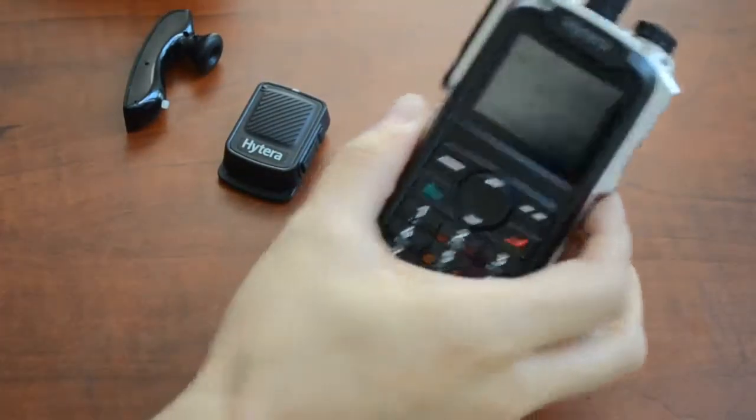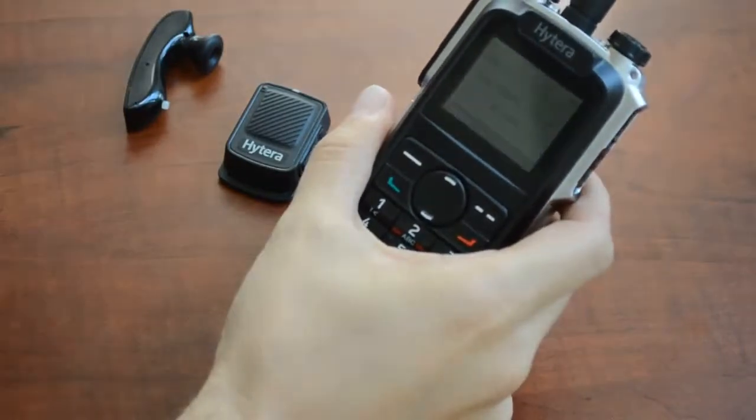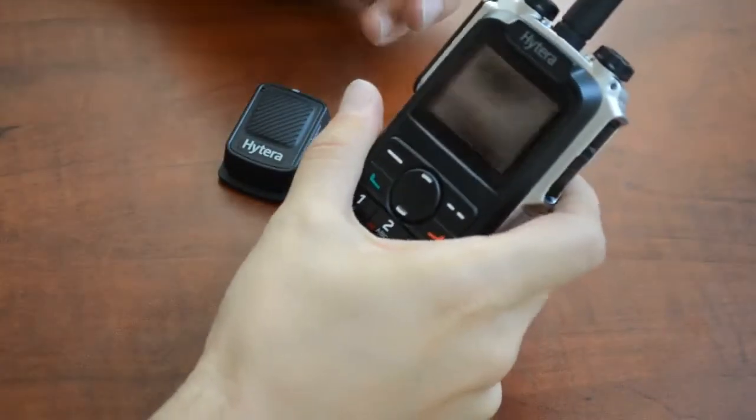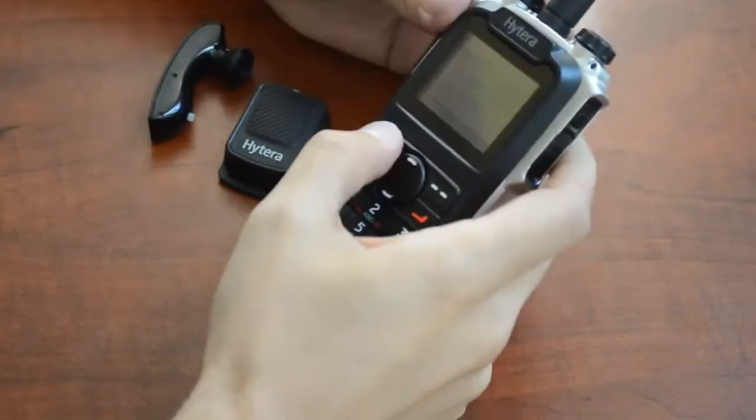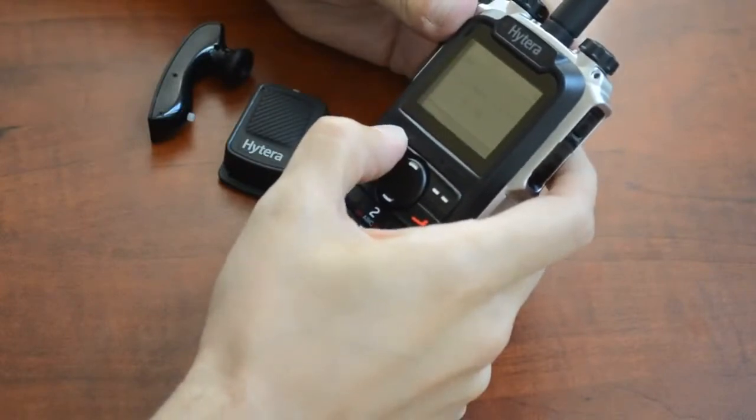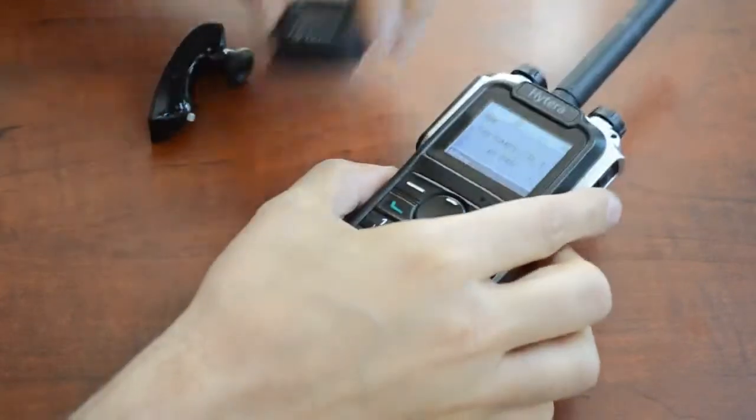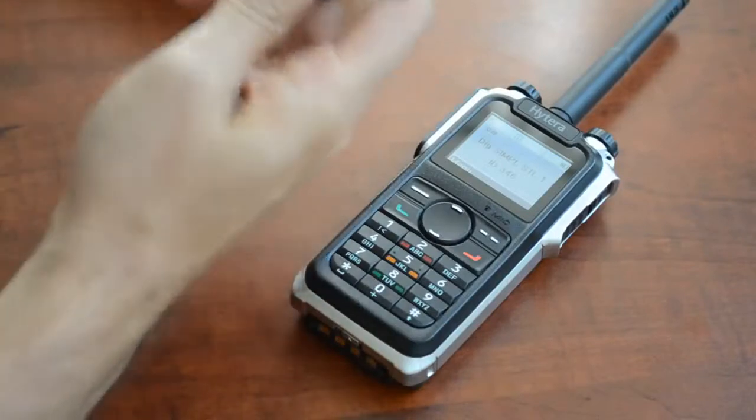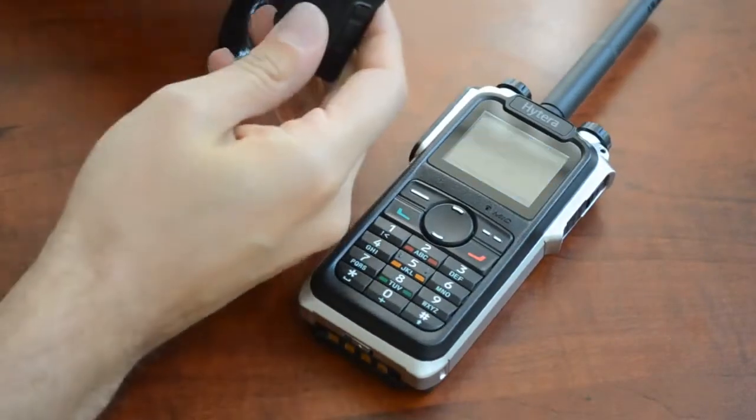Today we're going to show you how to pair your X1P with your Bluetooth accessories. First you want to make sure your radio is on and make sure your accessories are off.